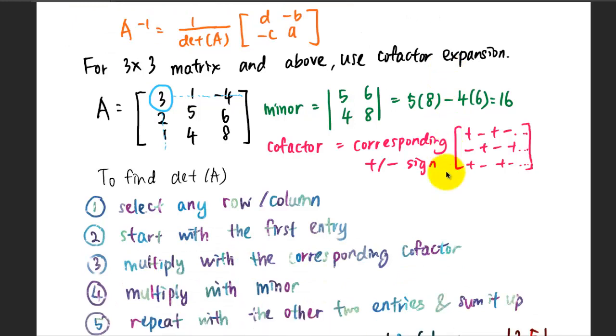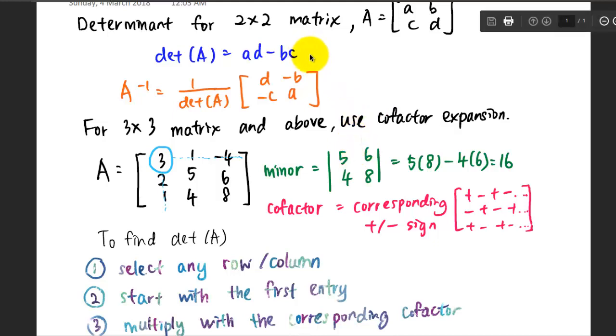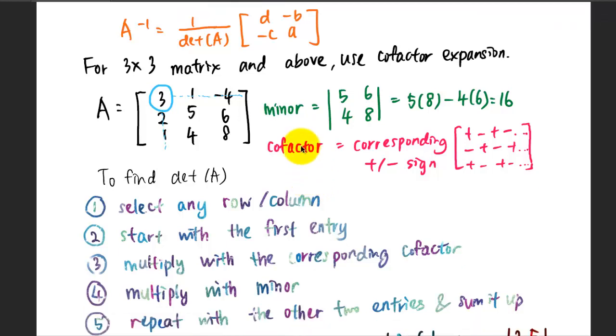There are three steps that you need to consider for cofactor expansion. The first is the entry. You have to select an entry and the second is about the minor. Minor is the determinant of the smaller matrix corresponding to the particular entry. So if entry 3 has been identified, I get rid of the entry along this row and this column. The leftover entries are the smaller matrix which has been assigned to this 3. The minor will be the determinant of this smaller matrix, and to calculate the determinant you use the 2 by 2 matrix formula.